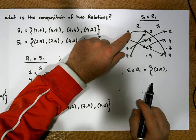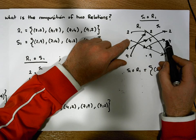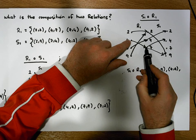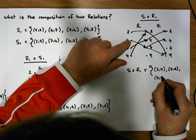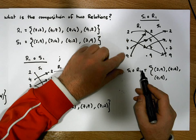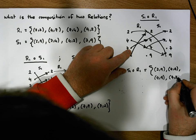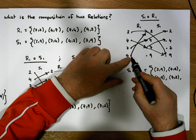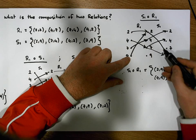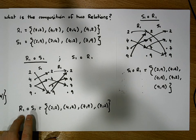From 4 we go to 7, which branches in two directions: 7 to 4 gives us (4, 4), and 7 to 9 gives us (4, 9). From 7 we go to 4 and then 4 to 2, giving us (7, 2). From 9 we go to 2 and then 2 to 9, giving us (9, 9). So S1 after R1 is: {(2,9), (4,4), (4,9), (7,2), (9,9)}.